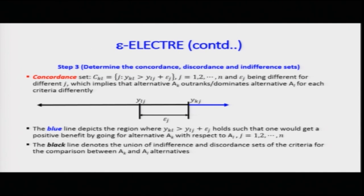The epsilon value ε_j can differ for different criteria J. For example, ε_1 = 0.01, ε_2 = 0.002, ε_3 = 10^(-4), depending on how you formulate the liking and disliking. These epsilon values imply that alternative AK outranks alternative AL differently for each criterion. On the number line, we divide into three zones — the concordance zone (blue/green), indifference zone (yellow/orange), and discordance zone (red) — analogous to traffic light colors.